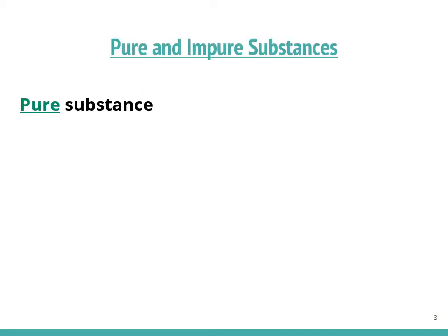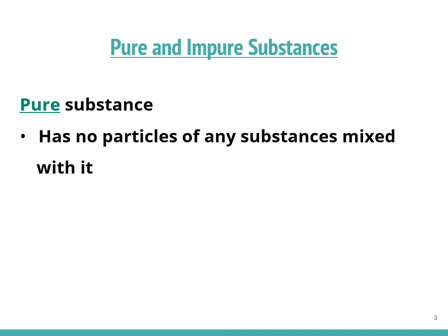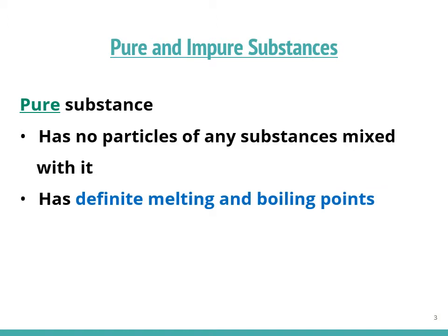Before we go any further, let us discuss the difference between pure and impure substances. What is meant by pure substances? A pure substance has no particles of any other substances mixed with it, and the most important thing to note is that it has definite or fixed melting and boiling points.